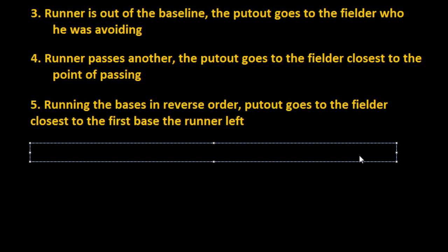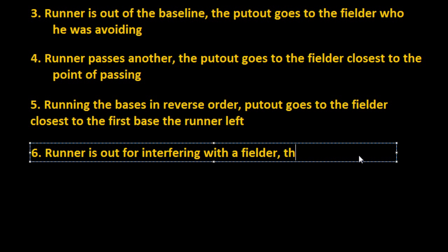The last two final ways are a little more confusing and extended. The sixth way is: if a runner is called out for having interfered with a fielder, the scorer shall credit the put out to the fielder with whom the runner interfered. So when a runner is called out for interfering with a fielder, the put out goes to the fielder who was interfered with.